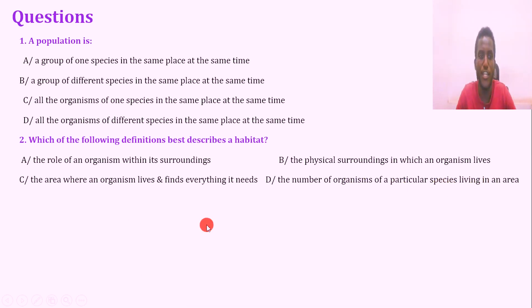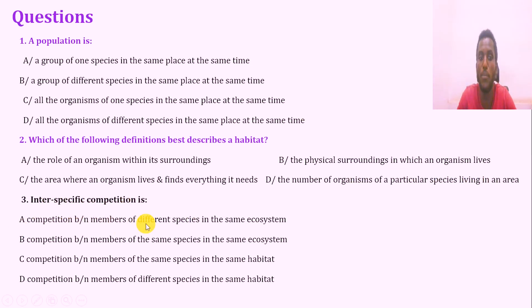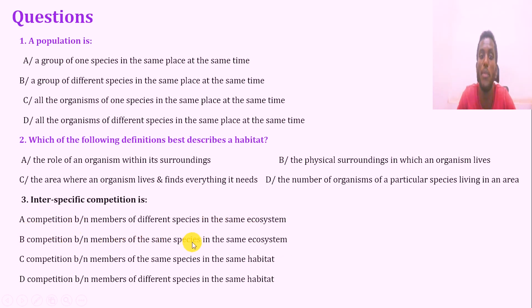Question number three: interspecific competition is — a. competition between members of different species in the same ecosystem; b. competition between members of the same species in the same ecosystem; c. competition between members of the same species in the same habitat.